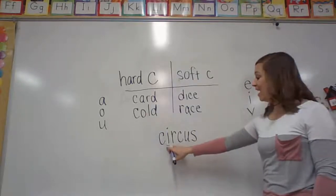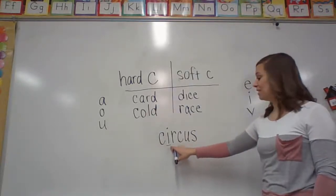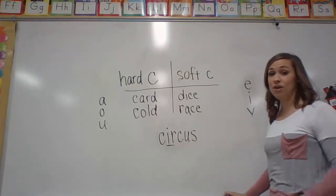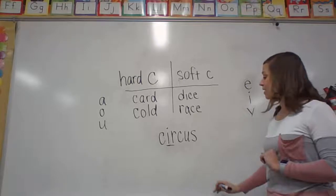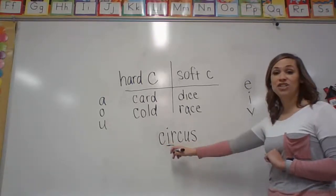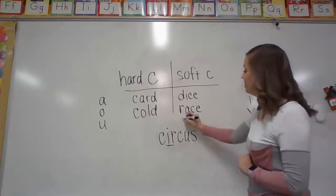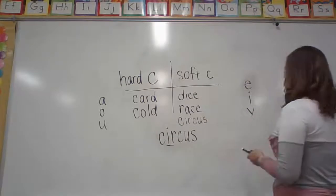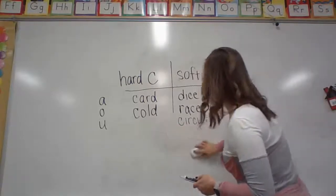So now the I isn't going to say it in this word though because it's right next to the R. It's got a bossy R. So remember IR says like the pump and the brakes. Circus. Circus. And that's another soft C word. You guys are amazing.